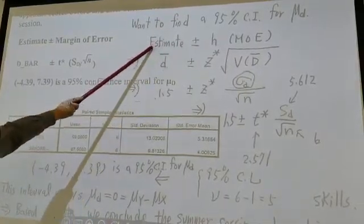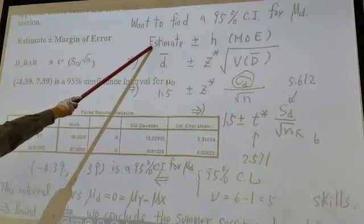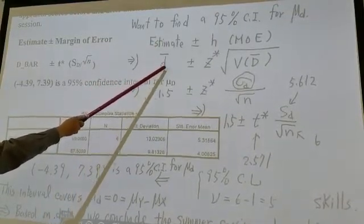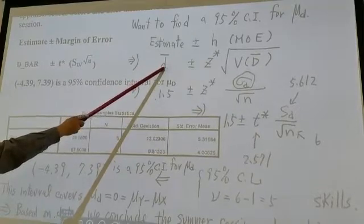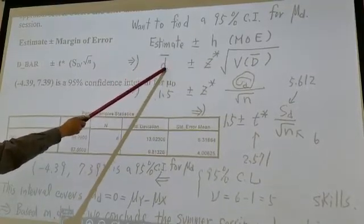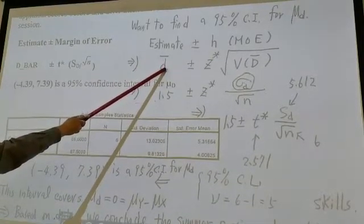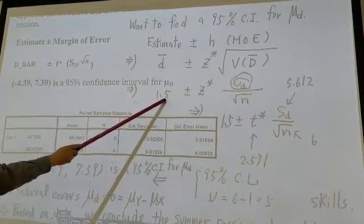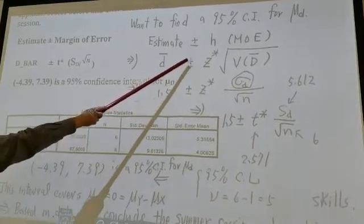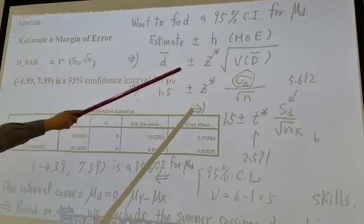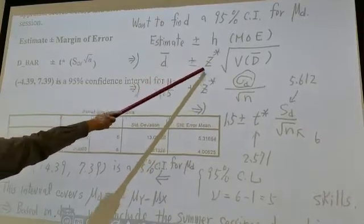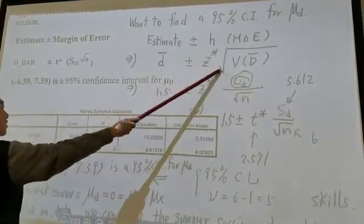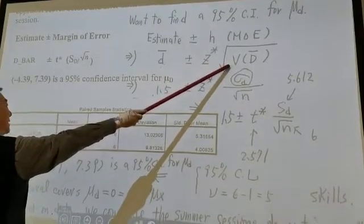The observation of an estimator, we call an estimate. I use lowercase d-bar. We find from earlier computation on the first page, for this sample, d-bar is 1.5. And then plus or minus z-star — z-star is a critical z value.